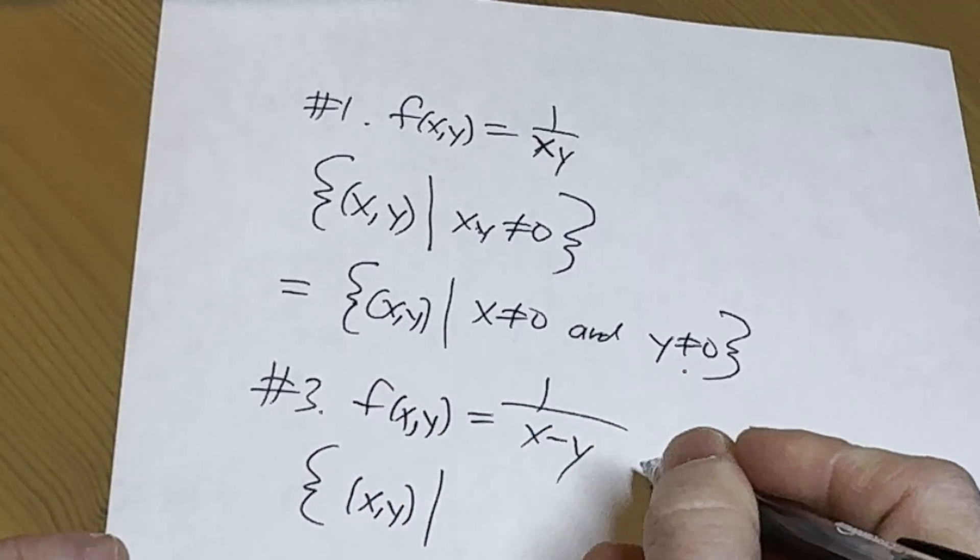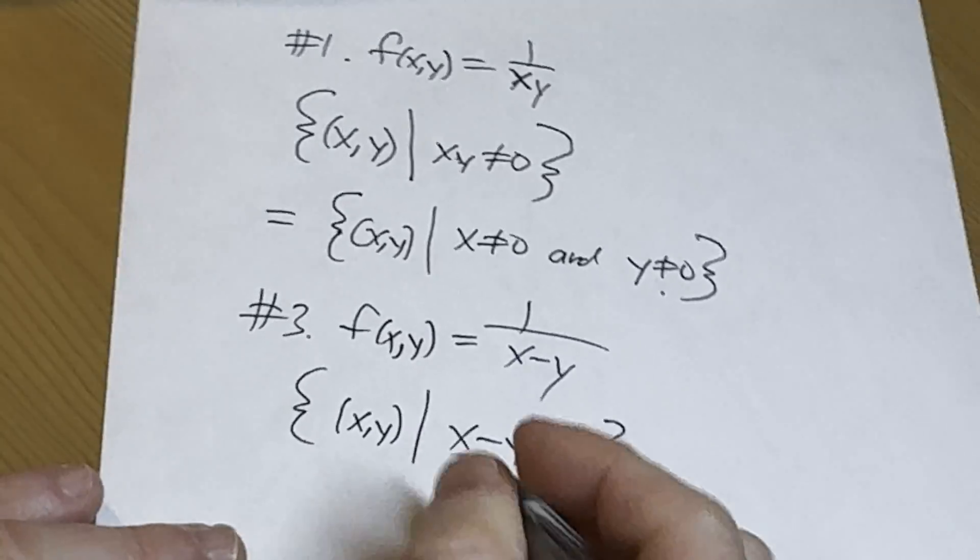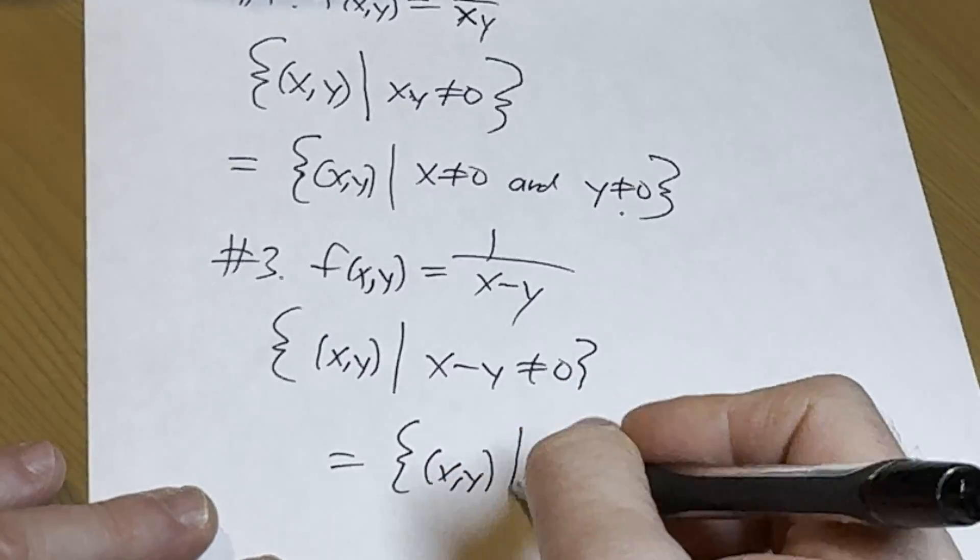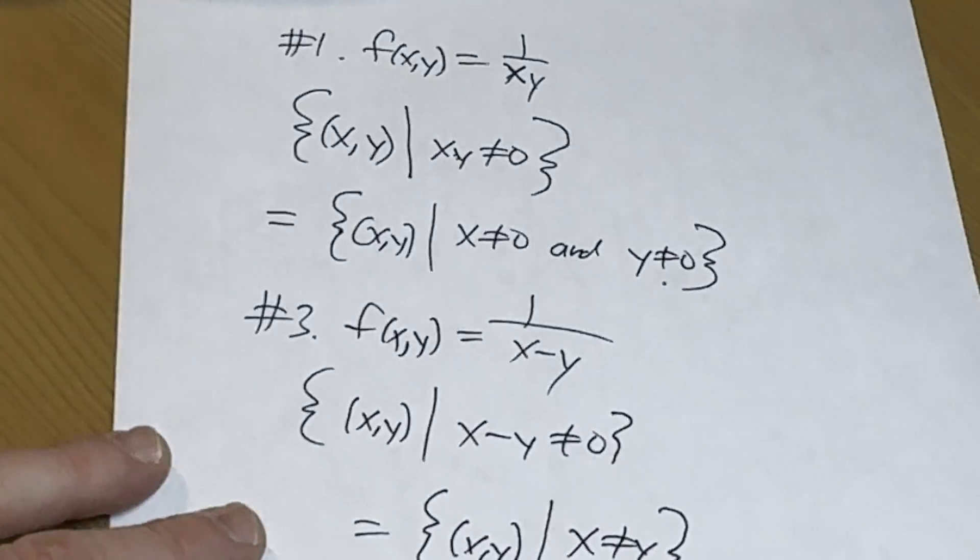Well, what's that? What's that? That's the same thing as saying the set of all ordered pairs, such that x is not equal to y. And obviously here, x and y are real numbers. So let's check our answers. Let's check our answers in the back of the book and see if we did this correctly.